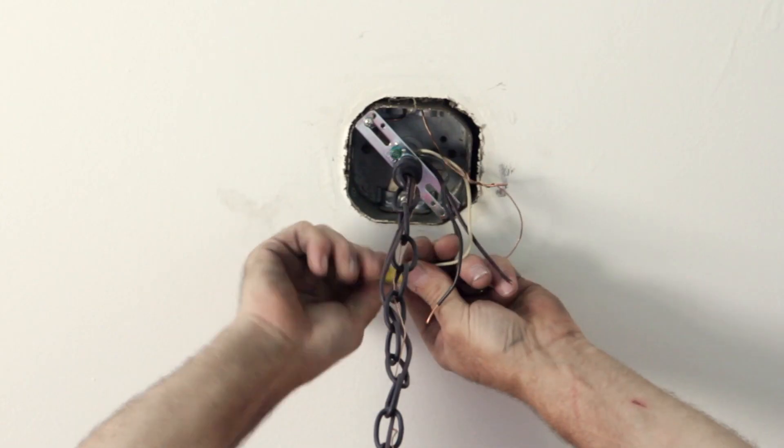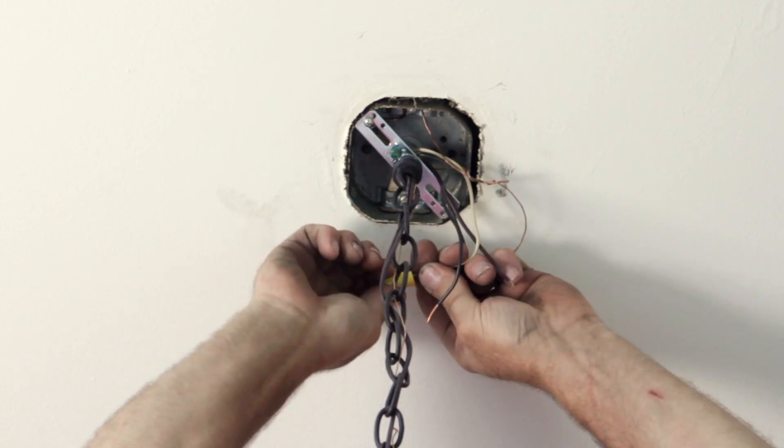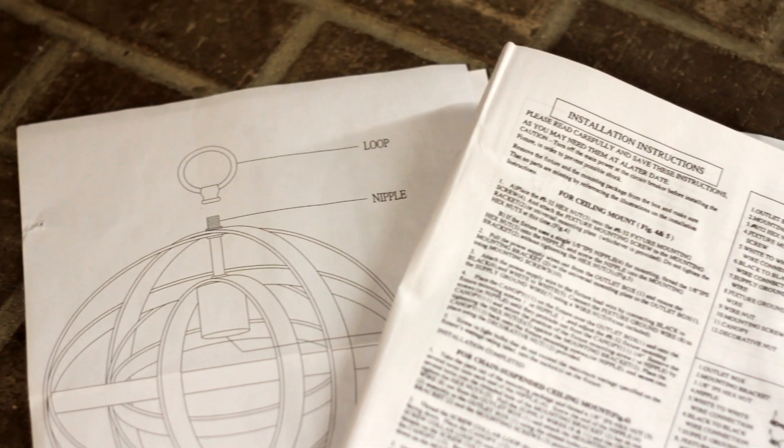Next, you'll install the new light fixture by connecting the wires with wire nuts. Be sure and follow any important information from the manufacturer in the manual.